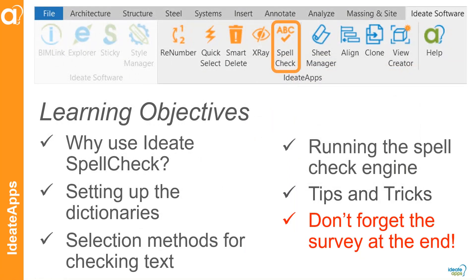Hopefully during this presentation we talked about why you should use ID8 Spellcheck. I gave you enough value to understand it's much more robust than the default Revit spell check engine. I talked about setting up the dictionaries — we have a great blog post; you can Google 'ID8 spell check dictionary setup' and the blog will pop up. I showed you the three main methods for selecting and checking the text, and we did a demo running through the spell check engine, plus tips and tricks for known issues and how to check certain items of text best put into a schedule.